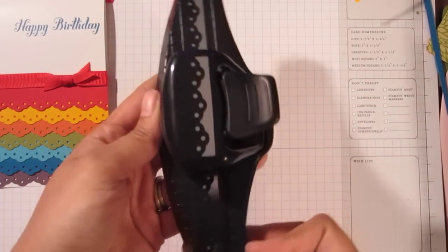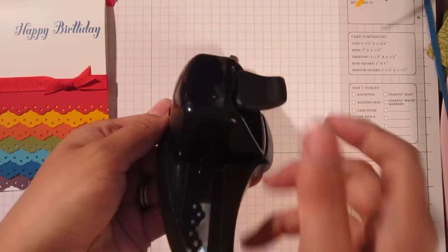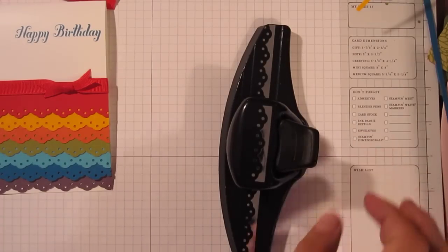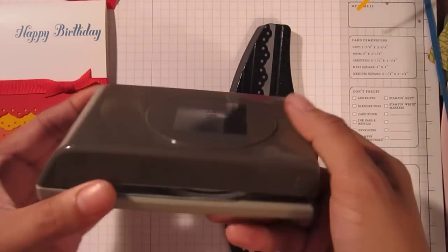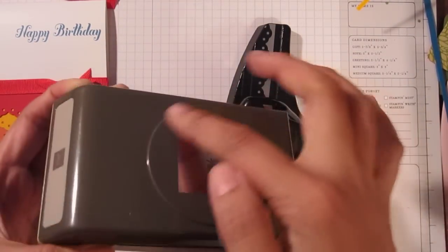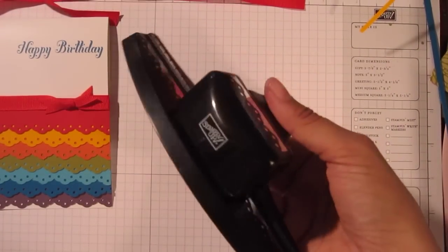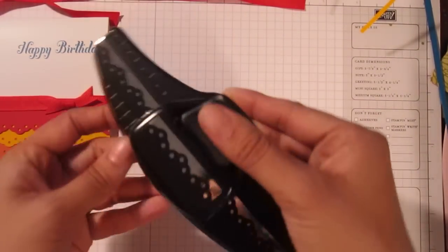And this is the old style Scallop Eyelet Punch, so it's got the lever handle. And the new one, the new punches, Stampin' Up! punches, look like this. They're gray and they're stackable. But I purchased this off the clearance rack for $9.59, which I thought was a steal, and I wanted to show you how to use it.